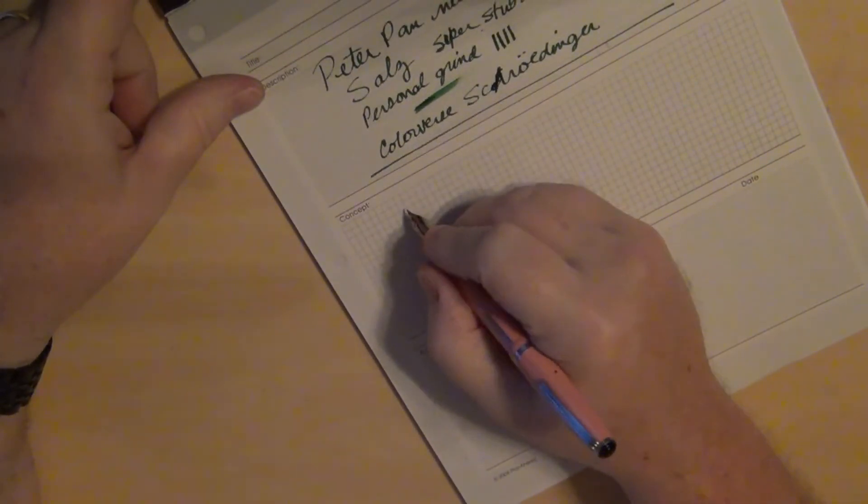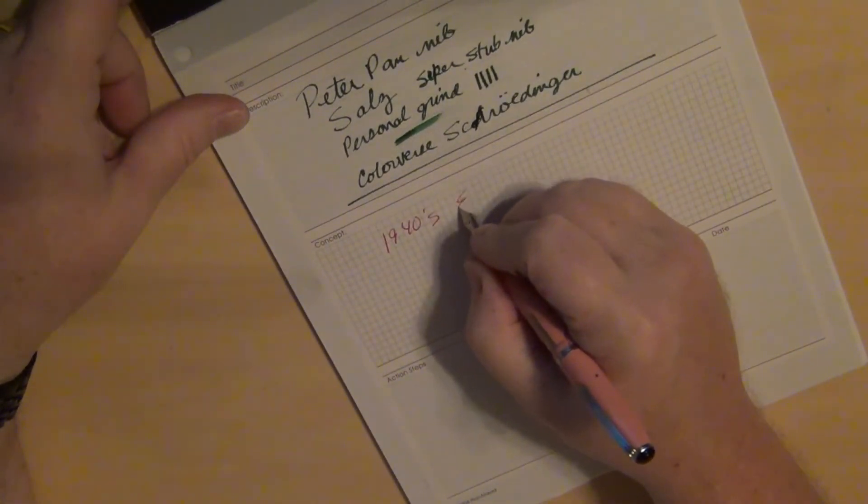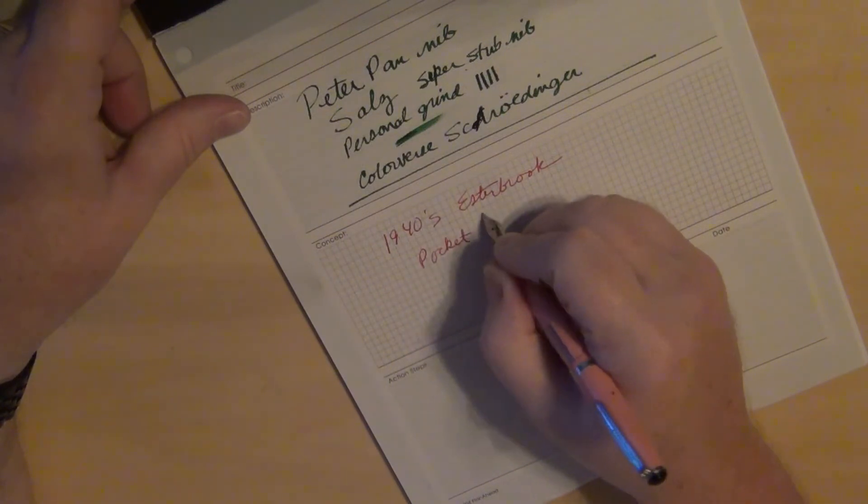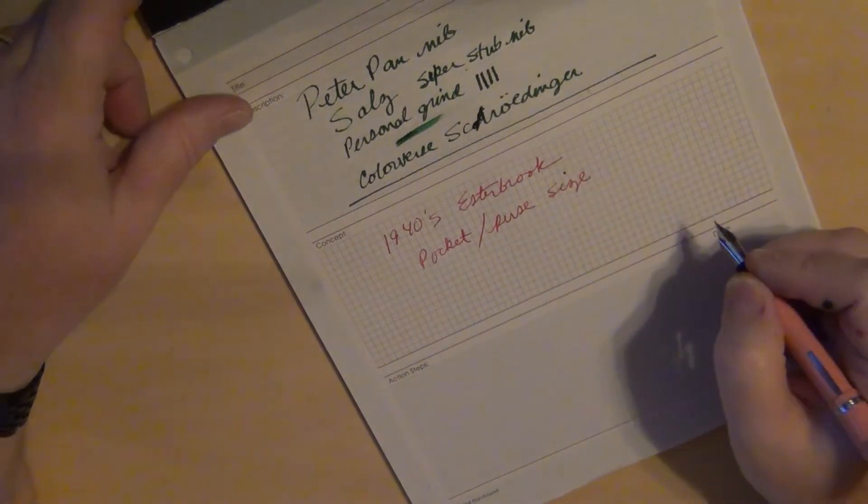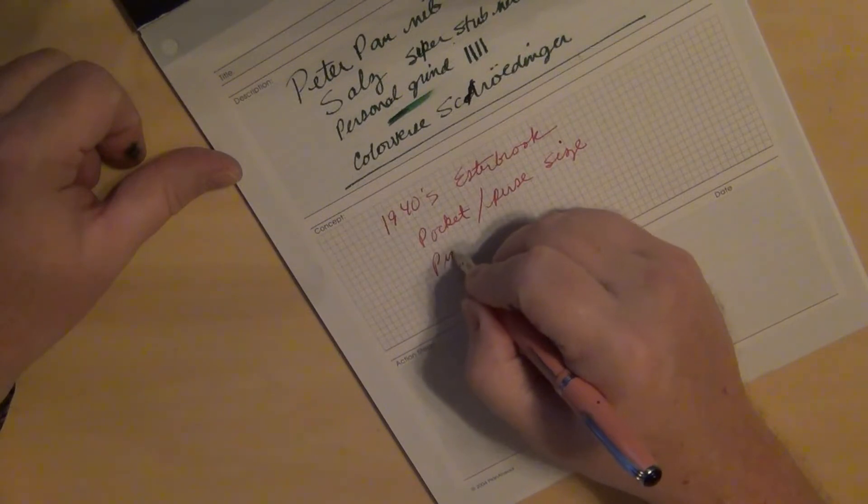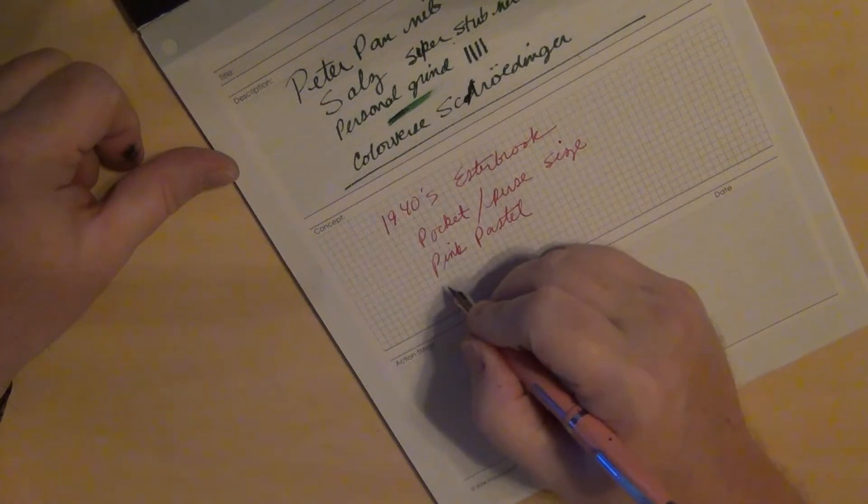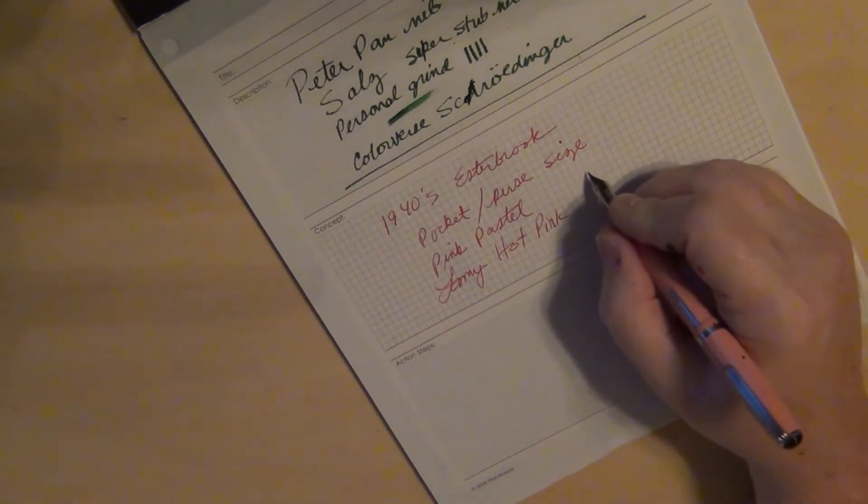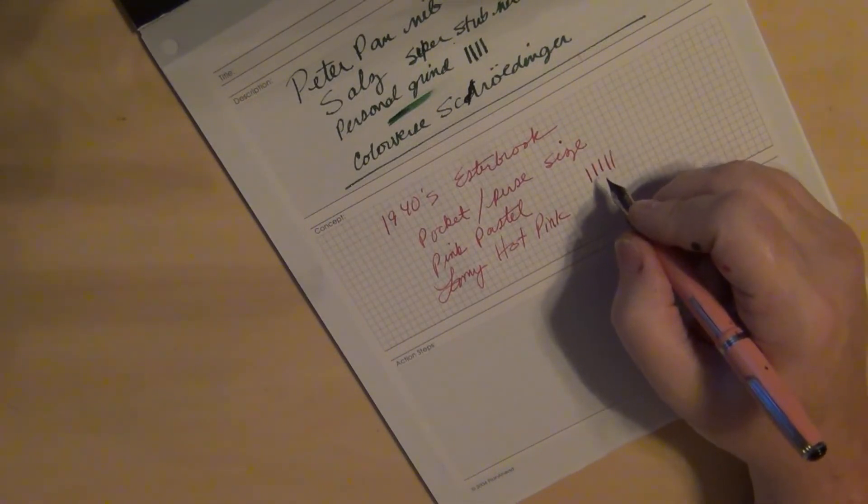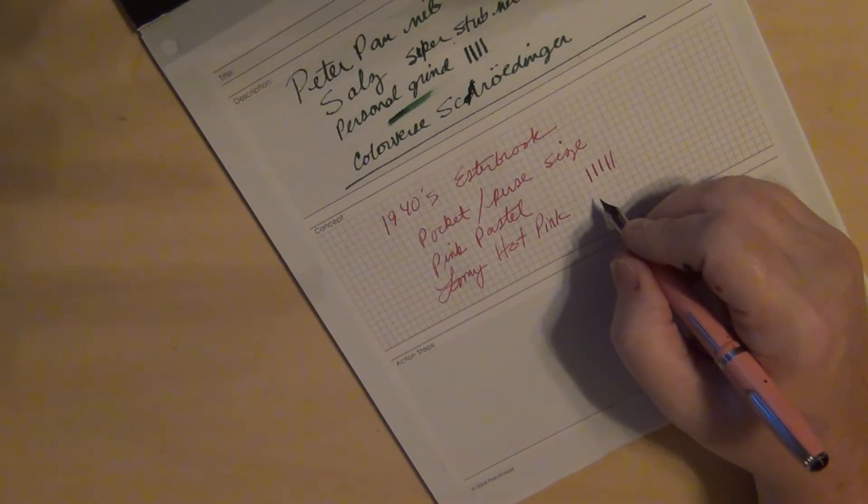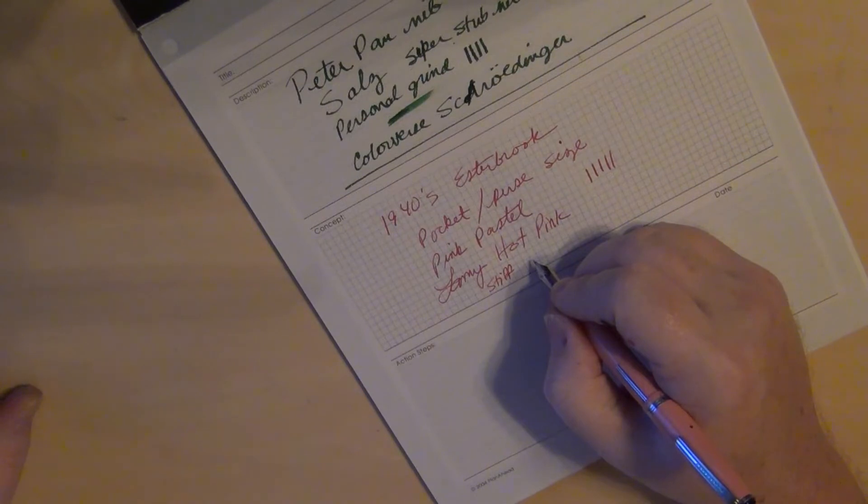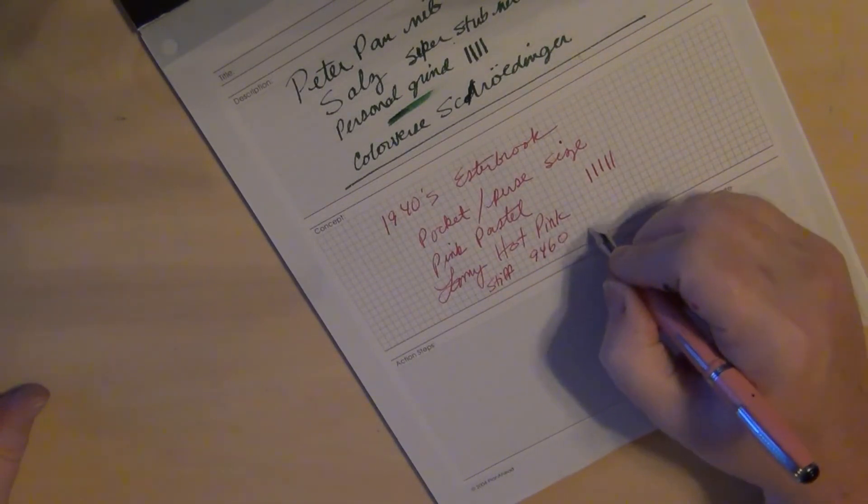So this is probably a 1940s Esterbrook. This is a pocket or purse size. And this one is obviously the pink pastel. And I put in some Lamy Hot Pink. And obviously too, I don't know if you can tell, this nib is really stiff. And this nib was actually designed to be used when you are trying to use like carbon copies, if those of you who are old enough to remember that. But you know, this particular nib here, I'm telling you, it is a very stiff, stiff, stiff. But this is a manifold medium. I think it was a 9460 nib. It's a medium.